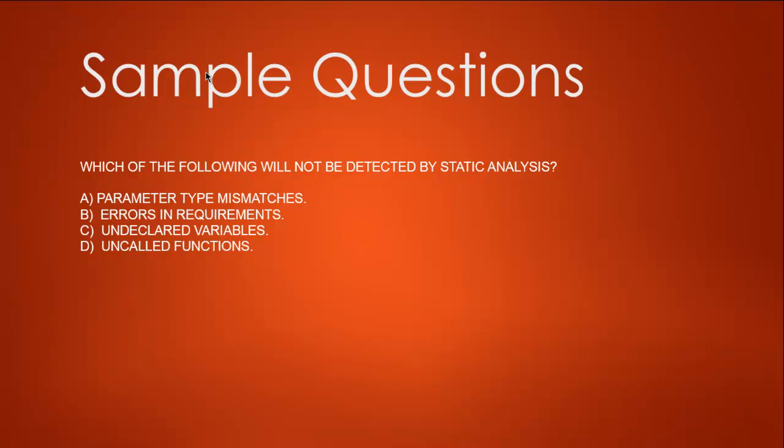Next question: which of the following will NOT be detected by static analysis? The options are: parameter type mismatches, errors in requirements, undeclared variables, and uncalled functions. Parameter type mismatches are not part of static analysis. Static analysis does check for errors in requirements. Undeclared variables - that's not covered by static analysis. Uncalled functions - also not covered by static analysis. So the answer is B - errors in requirements.